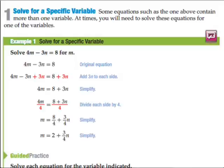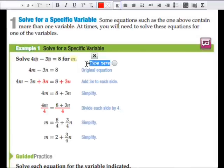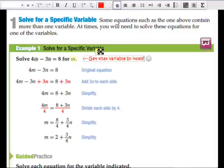So, solving for a specific variable. Sometimes we have to solve equations that have more than one variable, and when this happens we're just going to get, like you'll notice here we have an M and an N, and it says we're going to solve it for M. What that should mean to you is we're just trying to get that variable by itself.